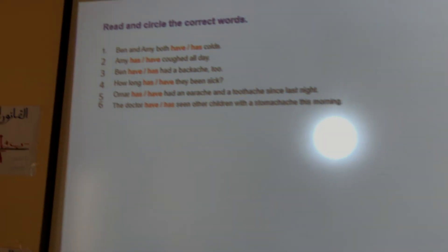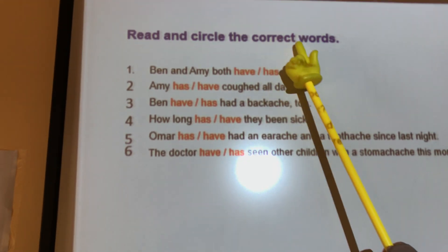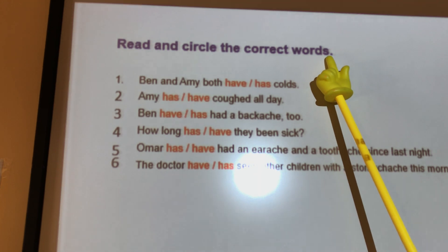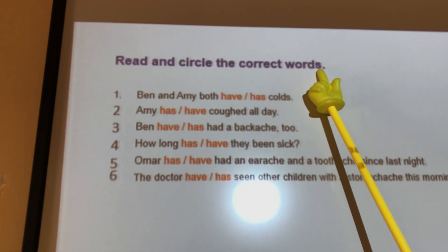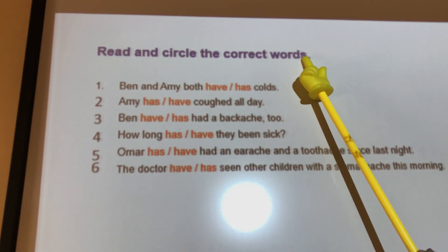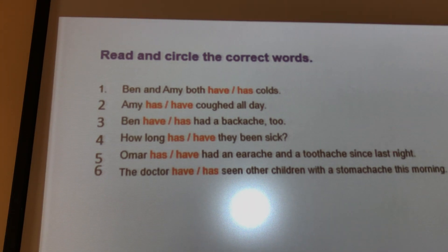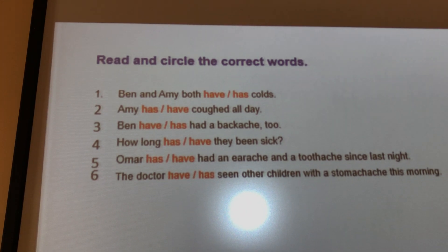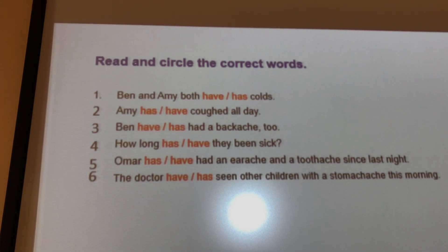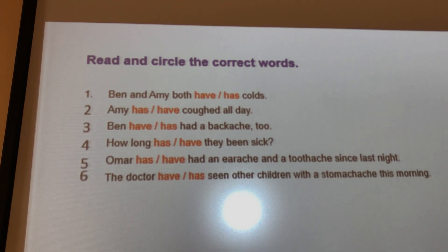Now let's look at the book. In the book, Question 3, they wrote the question for you. Let's read: 'Read and circle the correct words.' Before answering anything, I want you to read each sentence carefully and be careful about the subject. Let's do number 1 together, then you can do the others.